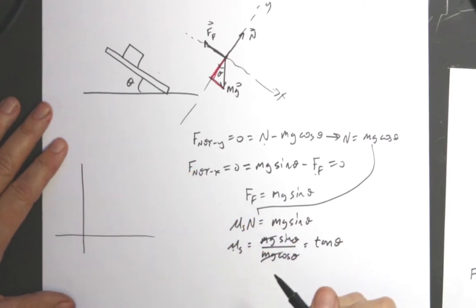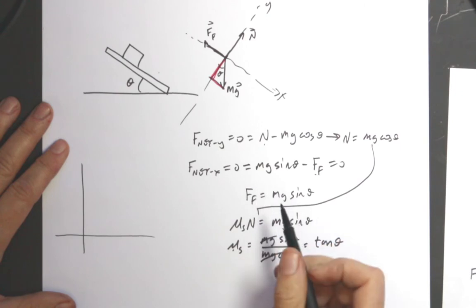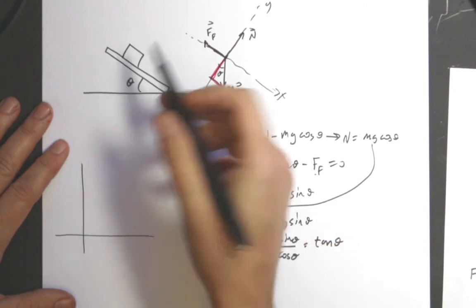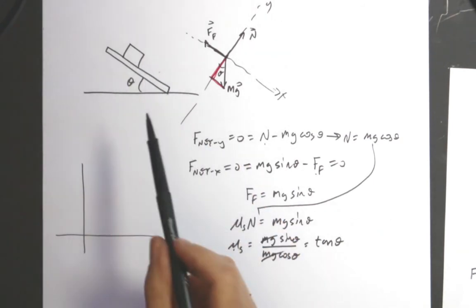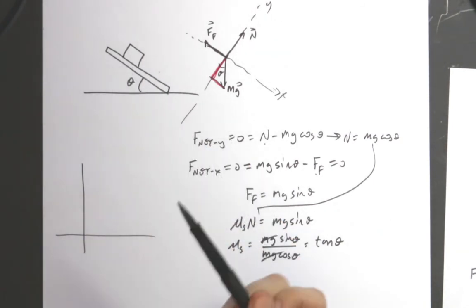So this will give me the coefficient of friction based on that angle. Now again, I couldn't do it for different masses, I could just repeat it many times. Because adding mass on this won't change the answer here. But repeat it many times and get the average and the standard deviation, and that would be the best way for that.